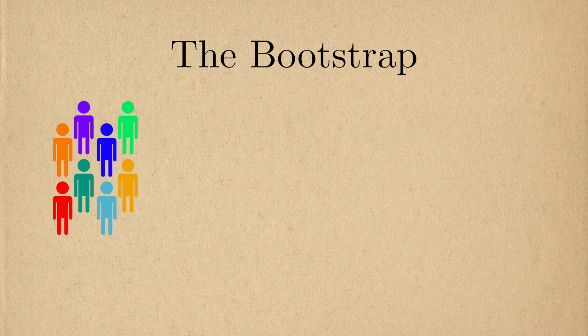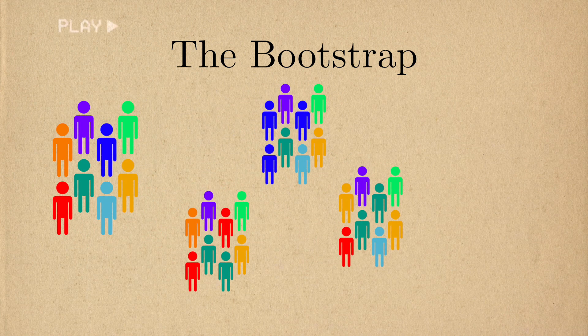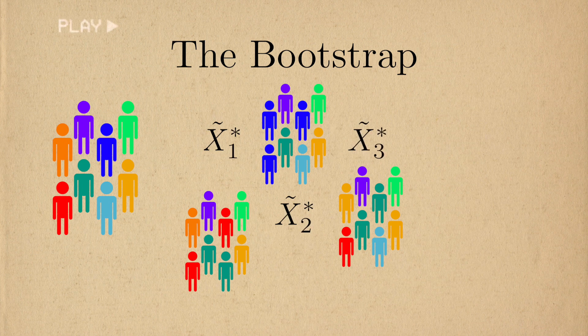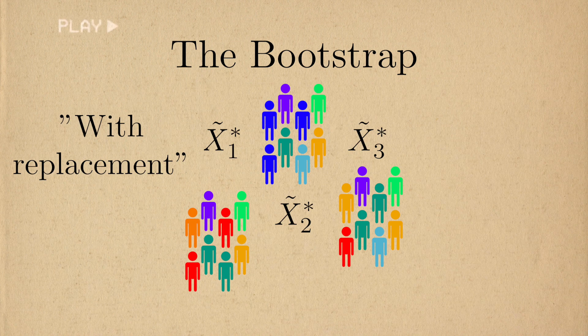Instead of collecting more data sets from the population, what if we collect data sets from the sample itself? From each of these bootstrap datasets, we estimate a bootstrap estimator of the treatment effect, or whatever statistic you want to get the distribution for. These bootstrap datasets will sample with replacement from the original data, meaning that it's possible that we'll have many duplicate observations in the data.